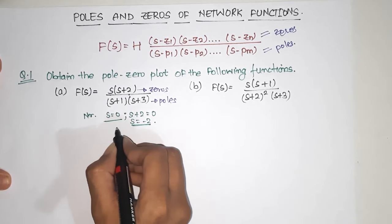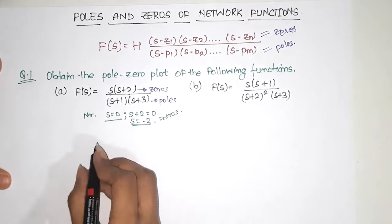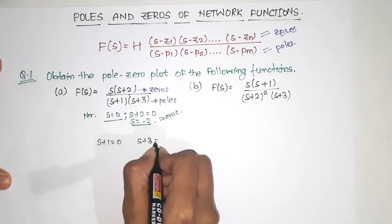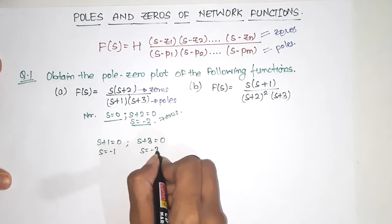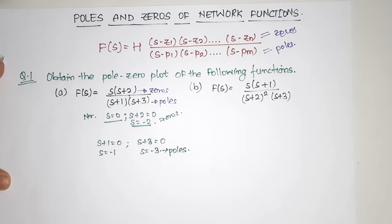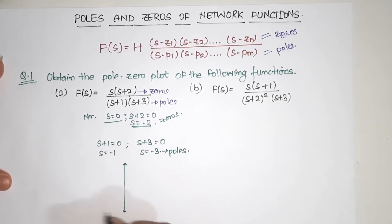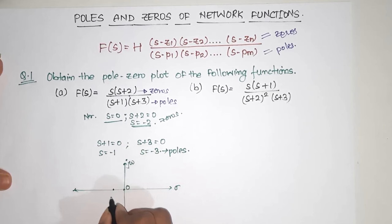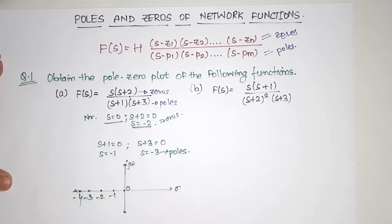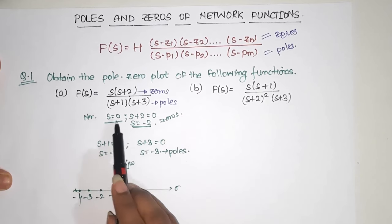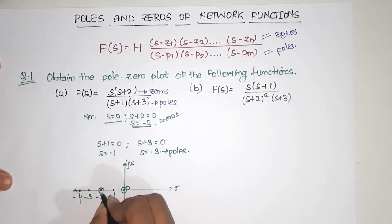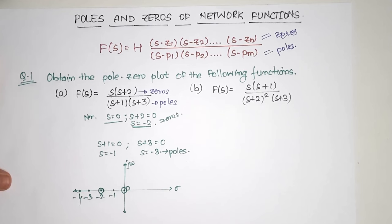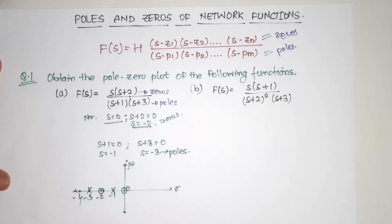Now the denominator gives us the poles. We will plot on the sigma axis (x-axis) and jω axis (y-axis). Zeros are represented by circles and poles by crosses. The two zeros are at 0 and -2, and the poles are at -1 and -3. So we mark those points accordingly on the plot.